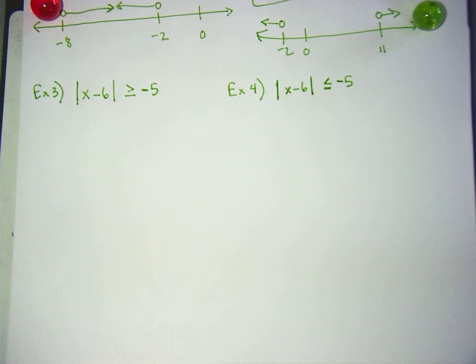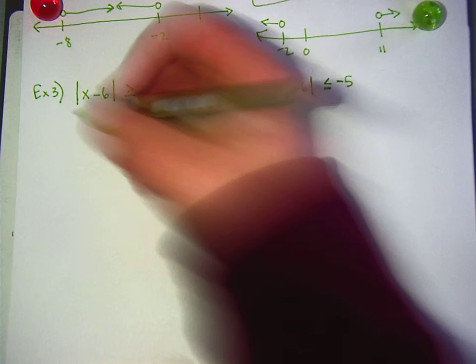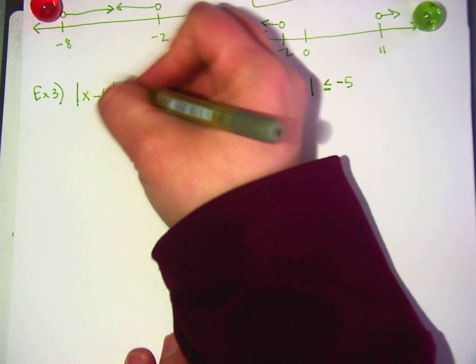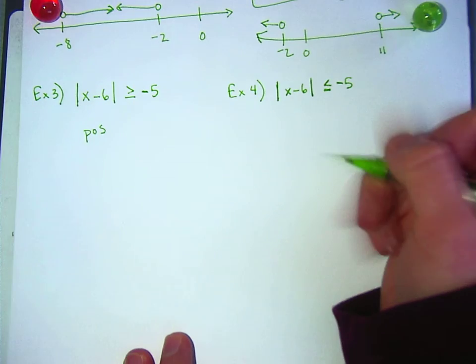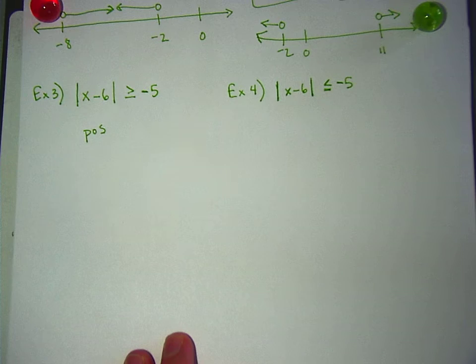Example three is infinite solutions, because no matter what you put in the absolute value signs, it'll be positive, and that'll be greater than negative 5. Perfect answer. So what Grace is saying is that this side always has to be positive. Do you guys agree?